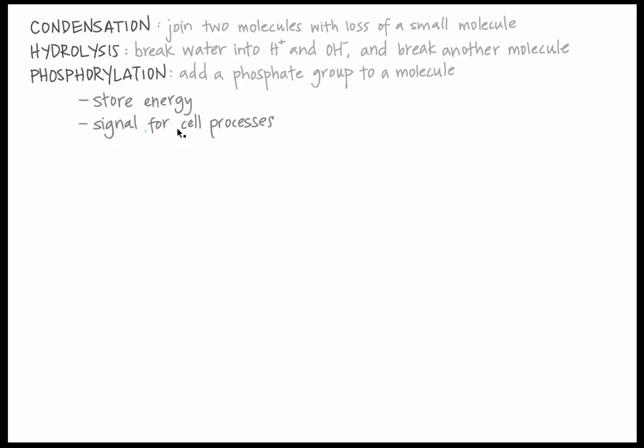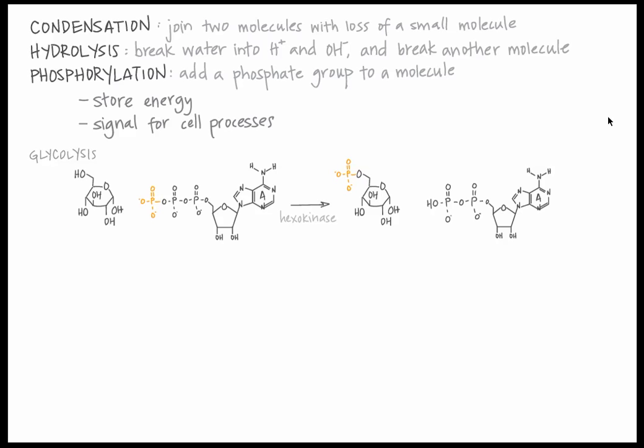It's also used as a signal for cell processes. In addition, phosphorylation makes molecules more hydrophilic. In glycolysis, phosphorylation reactions occur at a variety of steps. For example, the first step of glycolysis is the phosphorylation of glucose at carbon-6, forming glucose-6-phosphate.